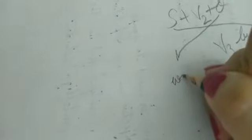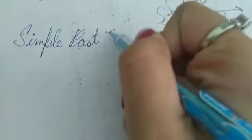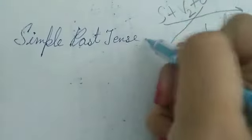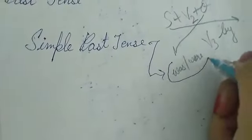All right, so in simple past tense we use only was and were. All right, look. Simple past tense. In simple past tense we use only these two helping verbs, was and were.